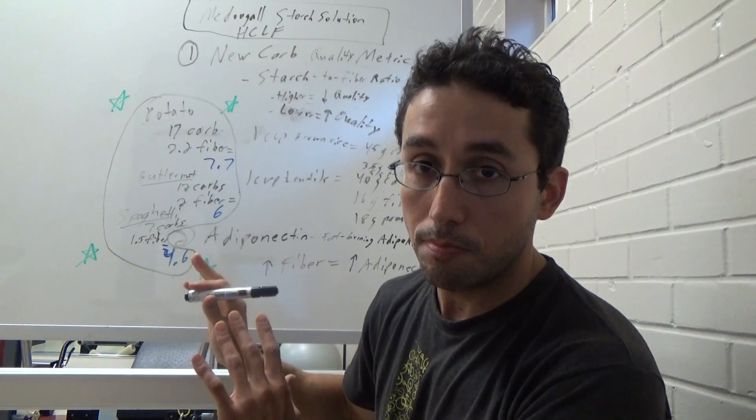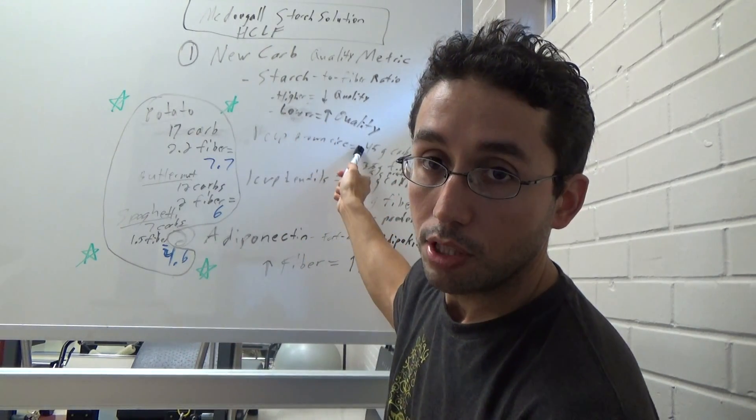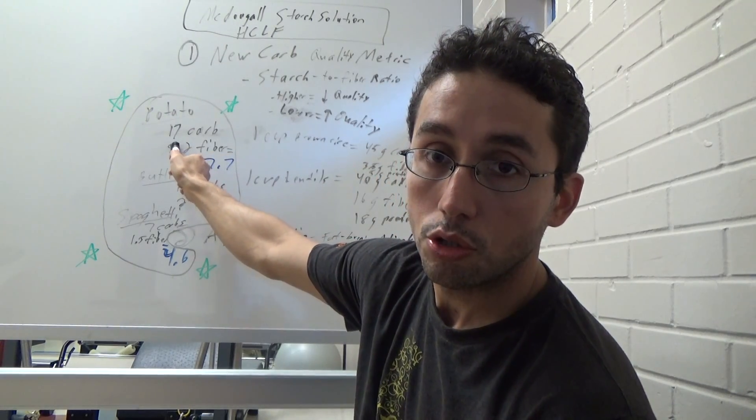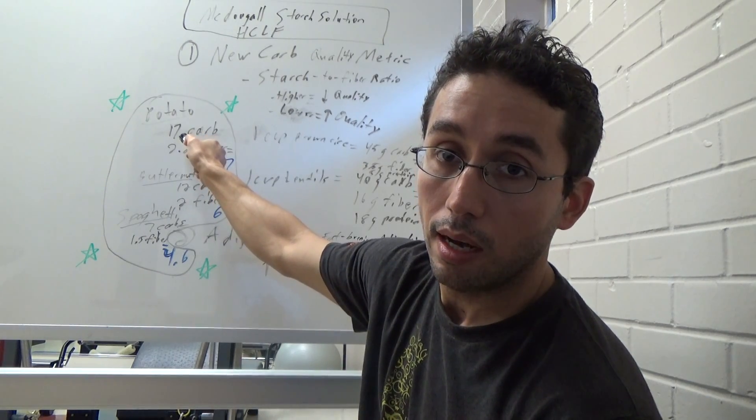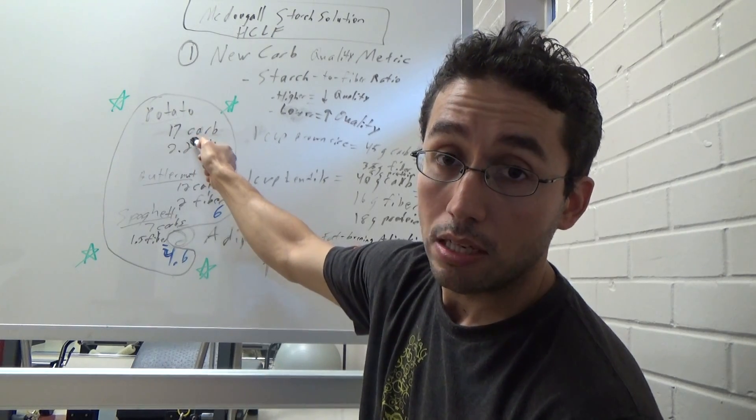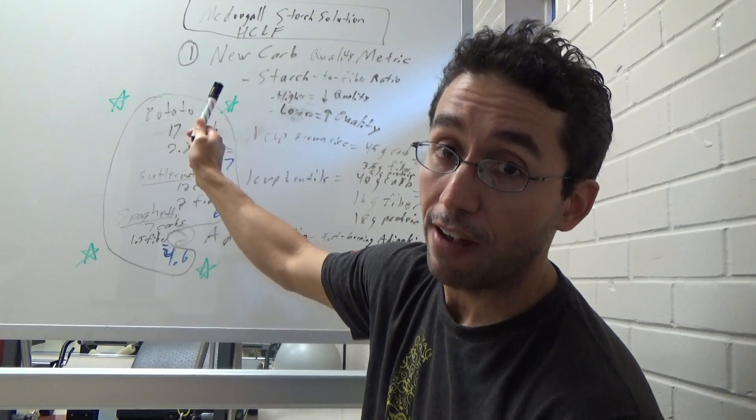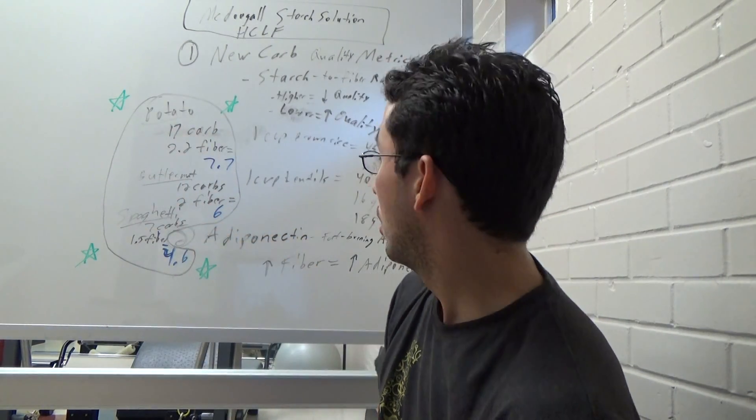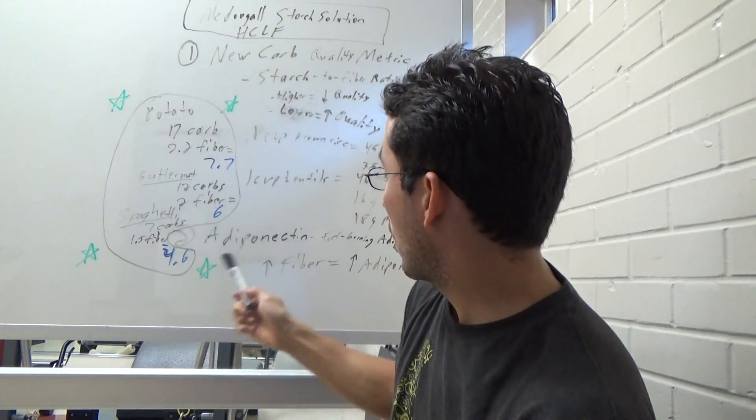Let me make this clear. The highest ratio of starch to fiber is in grains, brown rice and white potatoes. Those are staples in a lot of the high carb, low fat vegan diets. And you know what? I may make a follow up to this on fruit and that'll be fascinating. Like bananas versus berries. Stay tuned for that video. I may just put that in the video description, we'll see.